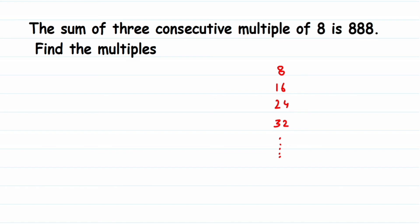In the question, if I add three consecutive multiples of 8, I should get 888. But we don't know what those three multiples are. So we have to assume them. Let the first number be x — this is an assumption, not an answer. Suppose 8 is my x; it's unknown.